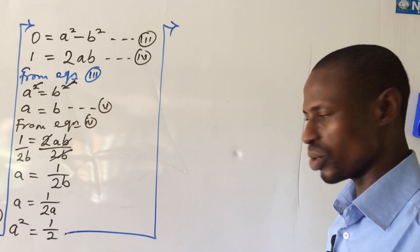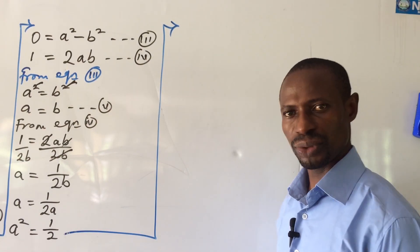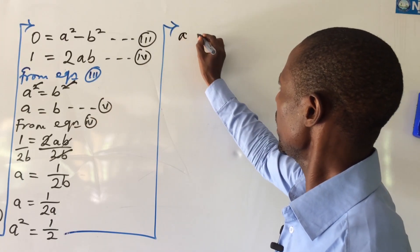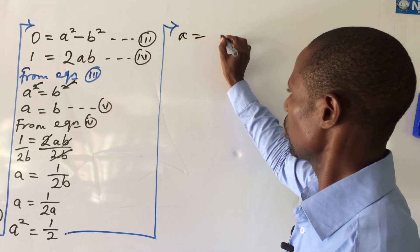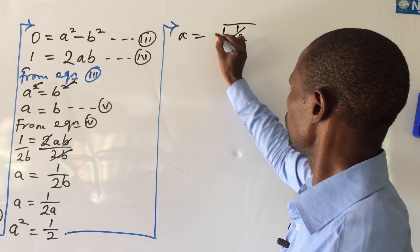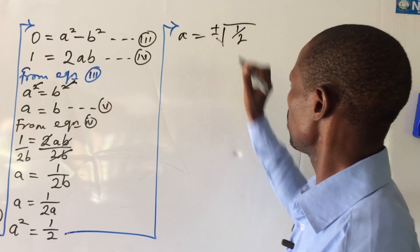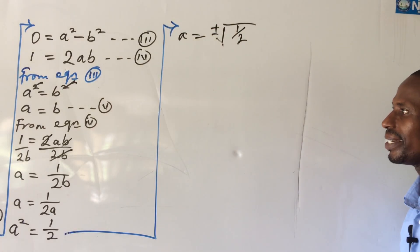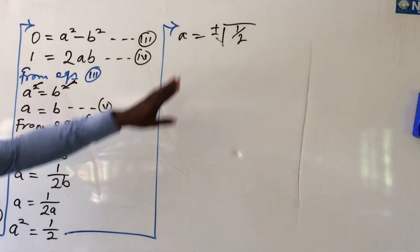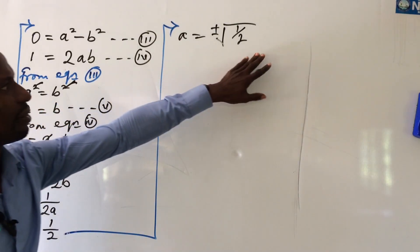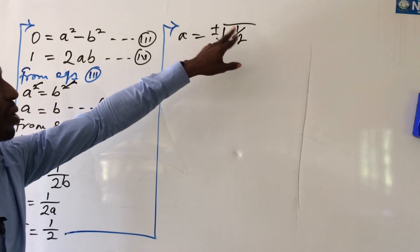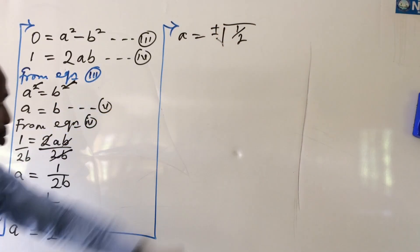We're looking for a, so we take the square root of both sides. This gives us a = ±√(1/2). So we've found the value of a to be plus or minus the square root of one-half.